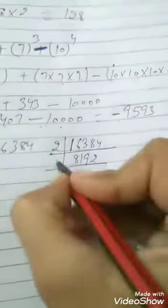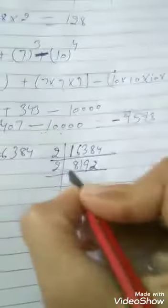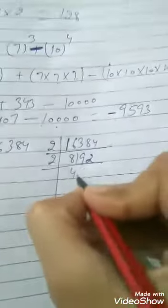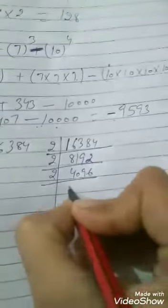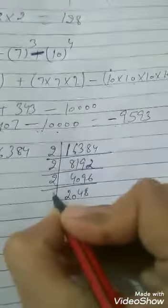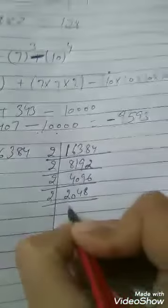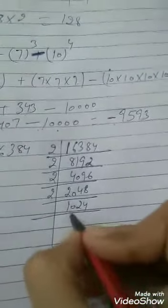8,192 we will get. After that it will be divided with 2. 4,096, again with 2. 2,048, again with 2.